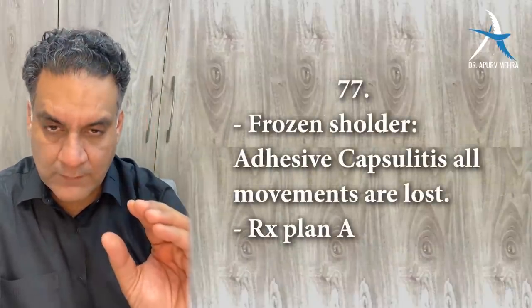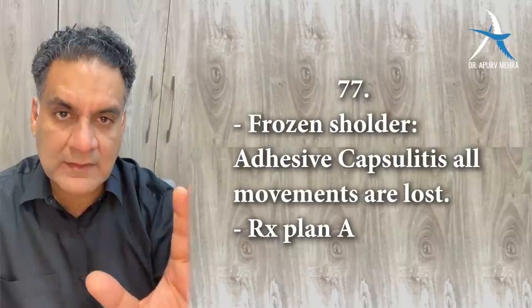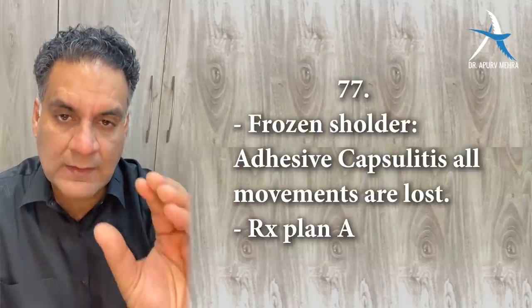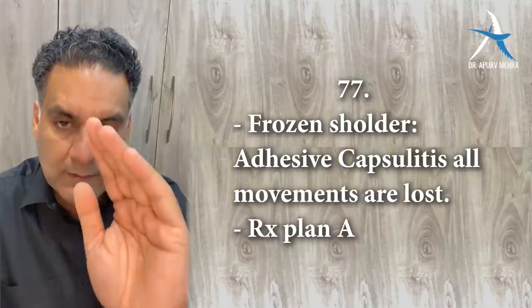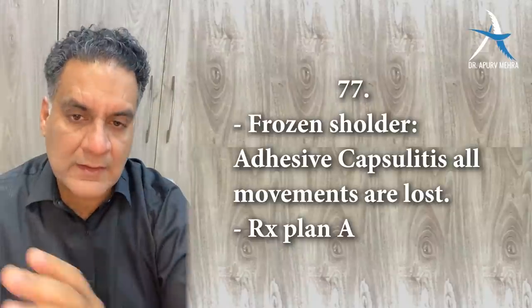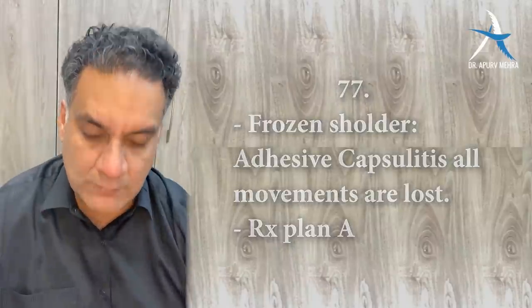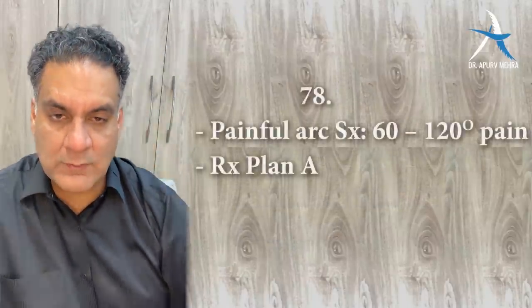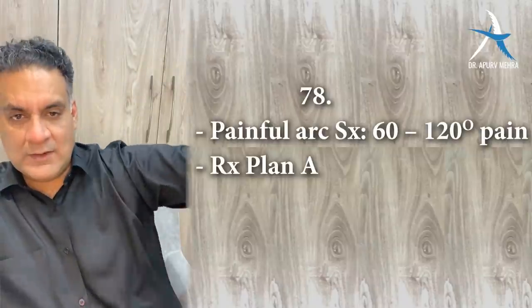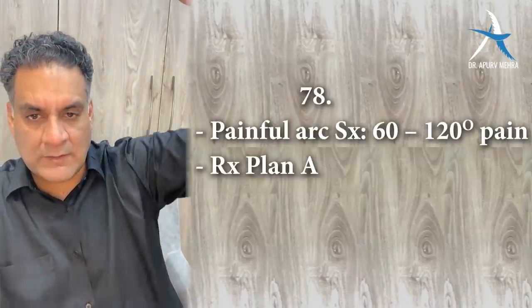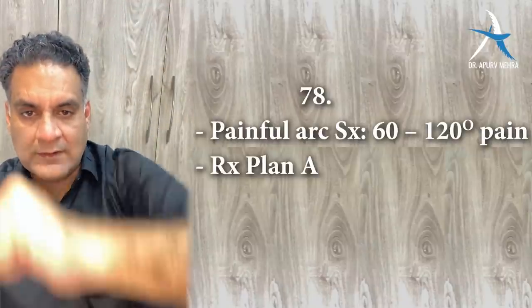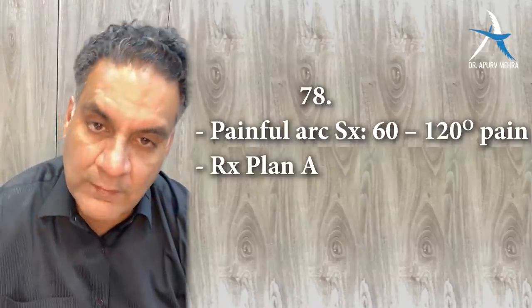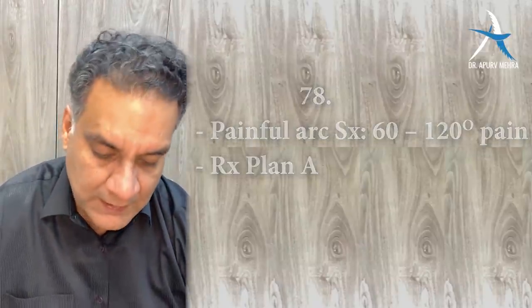Point number seventy-seven: frozen shoulder means adhesion of the capsule — adhesive capsulitis. Plan A is the treatment. Gradually all movements are lost. Point number seventy-eight: between 60 to 120 degrees of shoulder movement, if you have pain in the arc, it is called painful arc syndrome. Treatment is Plan A.